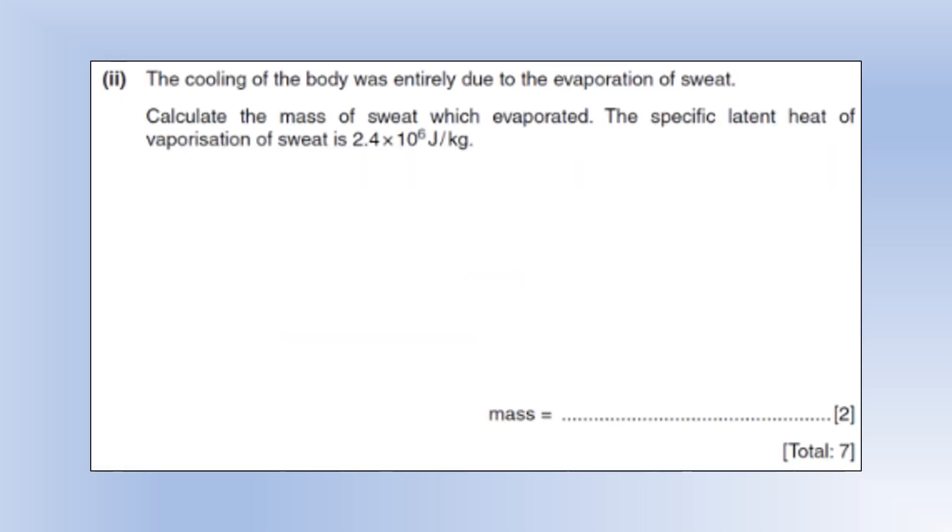Finally, the cooling of the body was entirely due to evaporation of sweat. Calculate the mass of sweat which evaporated. The specific latent heat of vaporization is 2.4 times 10 to the 6. So we're not going to need to make any unit conversions here like we often have to. So using Q equals mL, rearrange it. We calculated the energy in the last one. So divide by the latent heat of vaporization and that gives us our mass of 0.05 kilograms or 50 grams if you like.